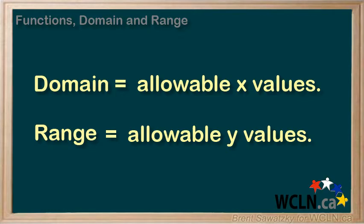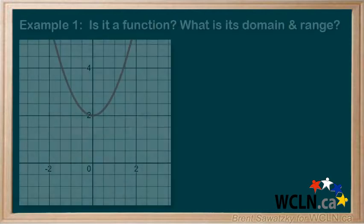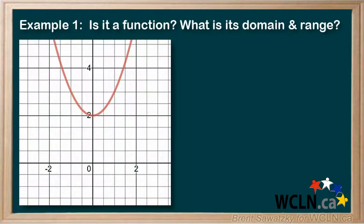And now that we have that little memory trick sorted out to keep the X and the Y straight, let's figure out what's meant by allowable. Example 1: Is the following relation a function and what is its domain and range?